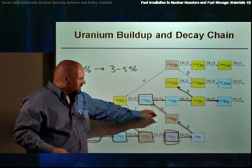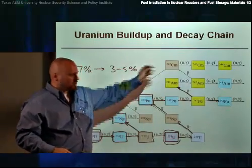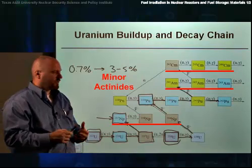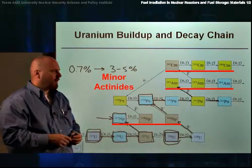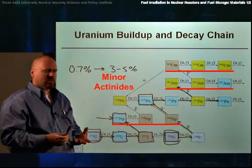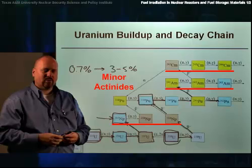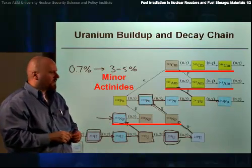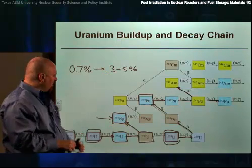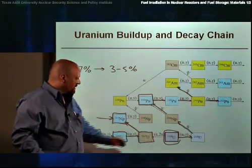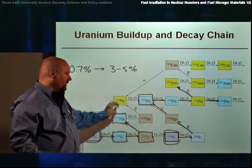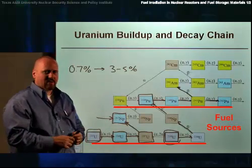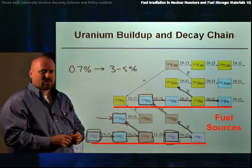The elements neptunium, americium, curium, and so forth are elements that we refer to as minor actinides. They are small players inside of the reactor in that they are small absorbers. The principal elements of interest to us are uranium and plutonium, both of which can serve as fuel sources inside the reactor.